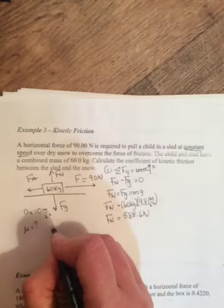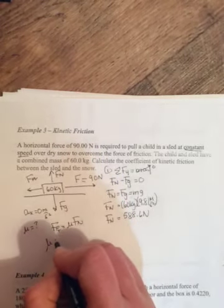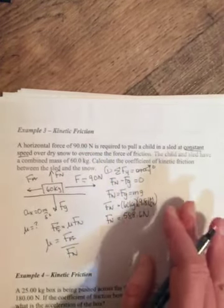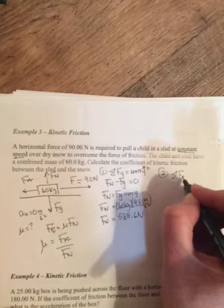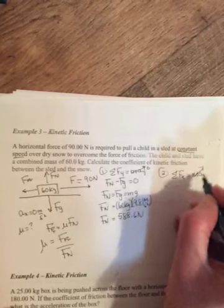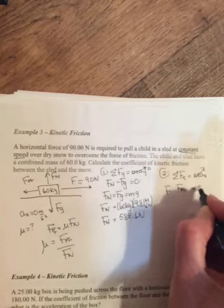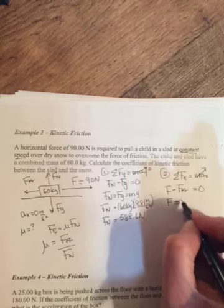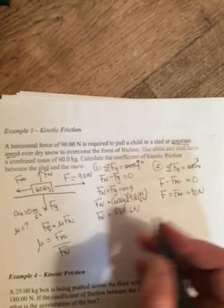We're looking for mu, and so we could find mu from Ffr is equal to mu Fn. So mu will be equal to the frictional force divided by Fn. We have Fn, but we don't have friction. So we can find friction just like we did in the last question by doing sum of the forces in the x is equal to max. Remember it said constant speed, so Ax is 0. What are the forces in the x? There's the F and there's friction equal to 0. Let's call direction of motion positive, so F will be equal to friction will be equal to 90 newtons.